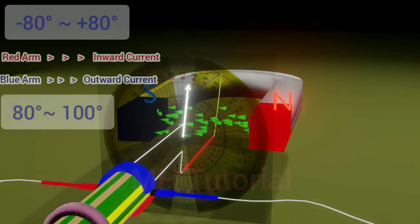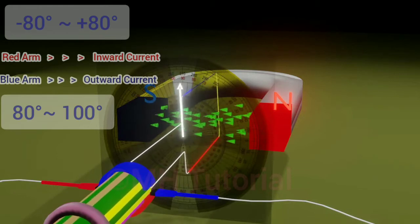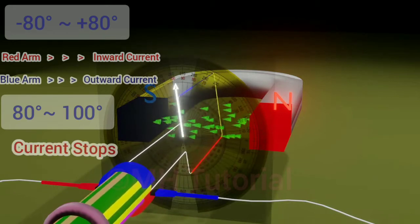If the armature is inclined at angles between 80 degrees to 100 degrees, the commutators will lose connection with the brushes and there will be no electric current to flow.